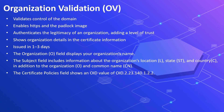OV (Organization Validated) SSL is best for business or non-profit websites and requires a higher verification level. The SSL certificate issuer verifies the address and location of the owner. Organization validation validates control of the domain, enables HTTPS and the padlock, and authenticates the legitimacy of an organization, storing organization details in the certificate. It can be issued in one to three days. The organization field displays your organization name, and the subject field includes information about the organization, location, state, and country. The certificate policy OID value is 2.23.140.1.2.2.